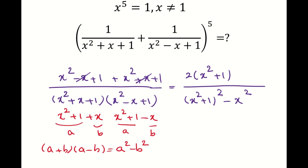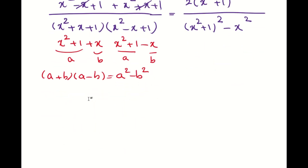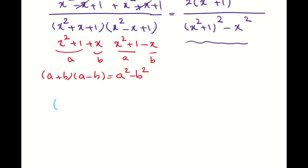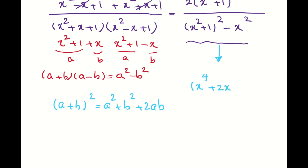Now I need to simplify further. I have (x² + 1)² in the denominator. Using the identity (a + b)² = a² + 2ab + b², I can expand this as x⁴ + 2x² + 1, then subtract x², which gives x⁴ + x² + 1. So the denominator simplifies to x⁴ + x² + 1.